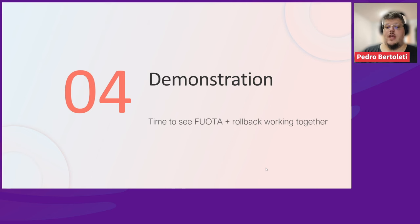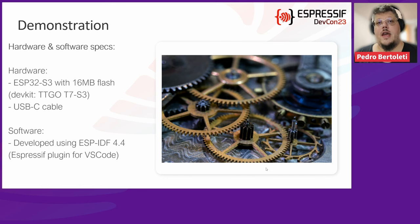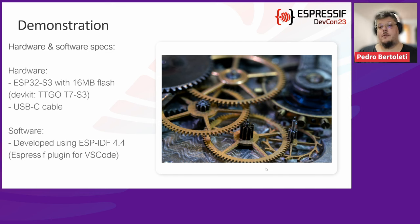Now let's check how FUOTA and rollback work together in a demonstration. For this demonstration, I'm using the dev kit from TTGO called T7S3, which contains an ESP32-S3 microcontroller with 16 megabytes of flash. From a hardware perspective, I use a USB-C cable to program the ESP32 and provide power. From a software perspective, this demonstration was developed using ESP-IDF version 4.4 and the official Espressif plugin for VS Code.